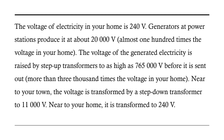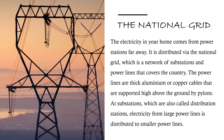The voltage of electricity in your home is 240 volts. Generators at power stations produce it at about 20,000 volts — almost 100 times the voltage in your home. The voltage of the generated electricity is raised by step-up transformers to as high as 765,000 volts before it is sent out — more than 3,000 times the voltage in your home. Near to your town, the voltage is transformed by a step-down transformer to 11,000 volts, and near to your home it is transformed to 240 volts.